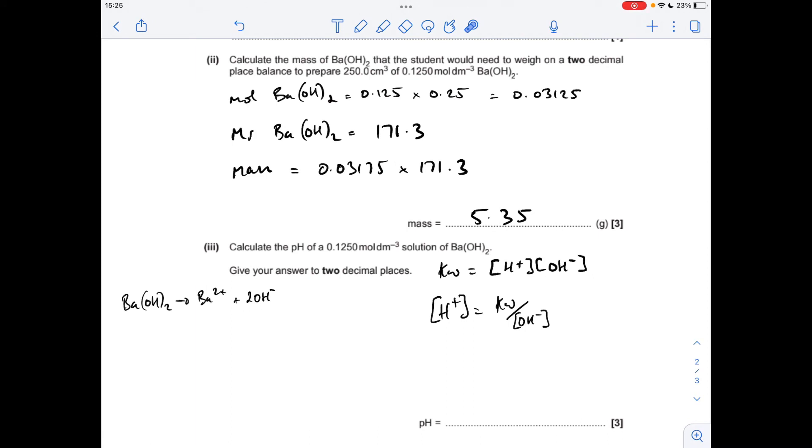Finally, the pH calculation for this solution of barium hydroxide. pH of a strong base or strong alkali - we use the Kw expression, rearrange for H plus concentration so we can minus log to get the pH. The H plus concentration will be Kw over the hydroxide ion concentration. The barium hydroxide has that concentration; the hydroxide ion will be double that from the way it dissociates, the 1 to 2 ratio.